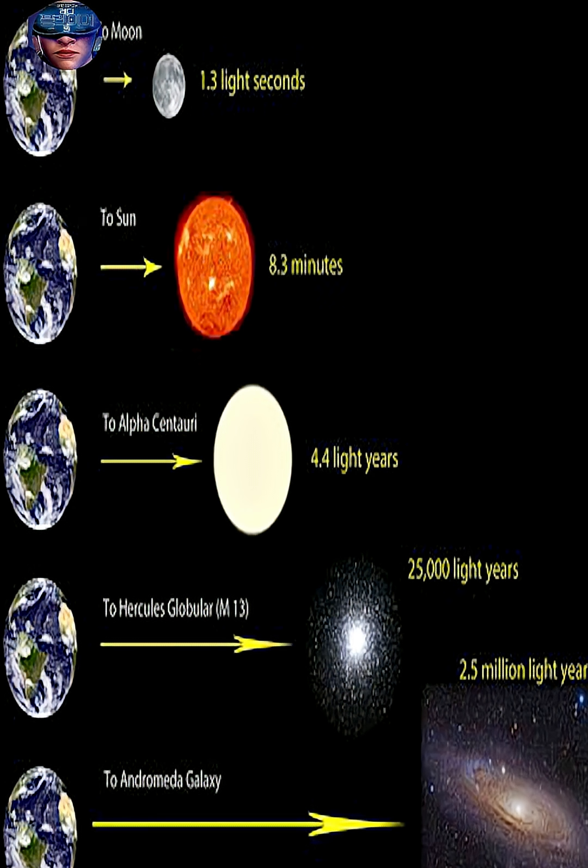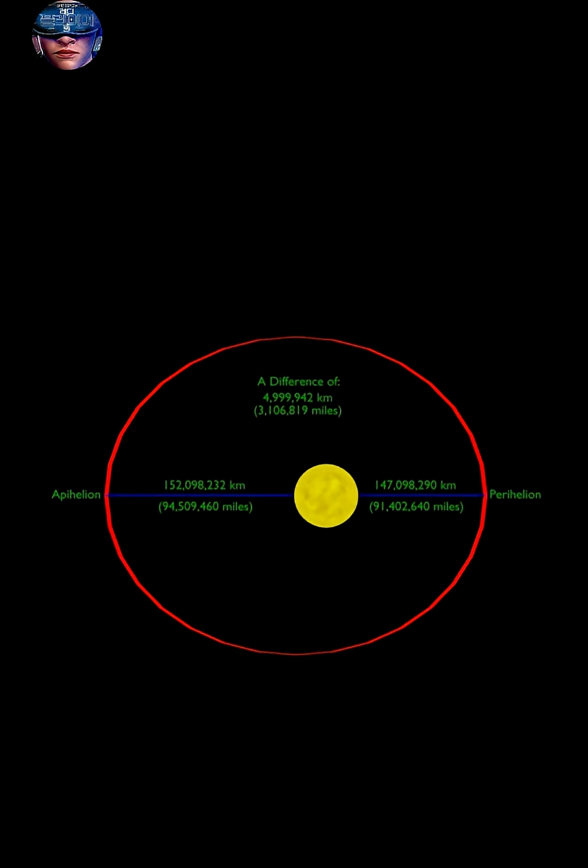Traveling at the speed of light, or even faster than the speed of light, is considered impossible for physical bodies, according to Albert Einstein's calculations a century ago.